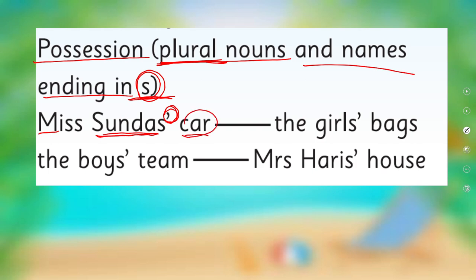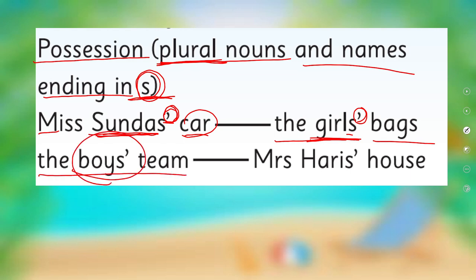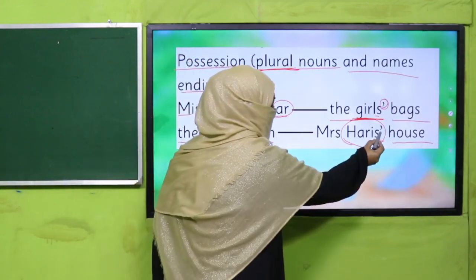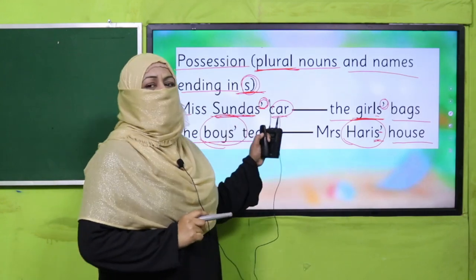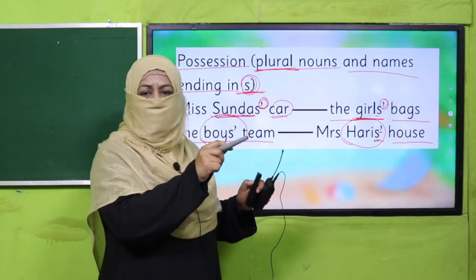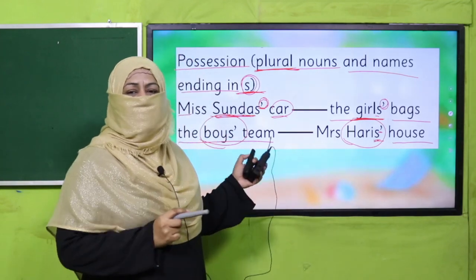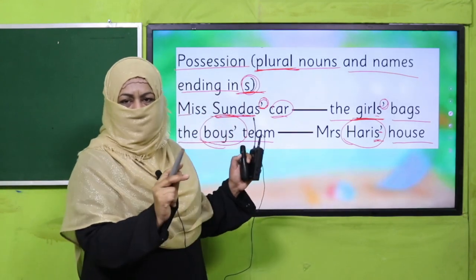'The girls' bags' — girls is already plural with an S, so after S we put the apostrophe. 'Boys' team.' 'Mrs. Harris' house' — this name already ends in S, so we just put an apostrophe after S to show possession. The thumb rule: wherever a naming word ends in S, put an apostrophe after S to show possession. If it does not end in S, put apostrophe-S. Simple.